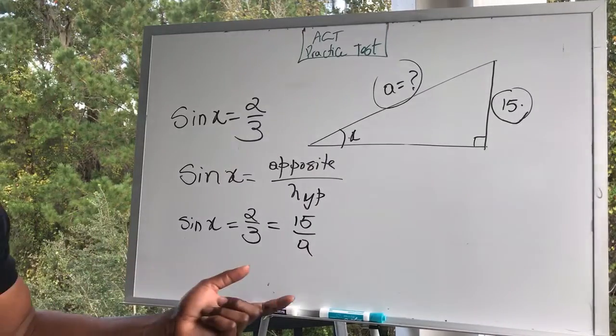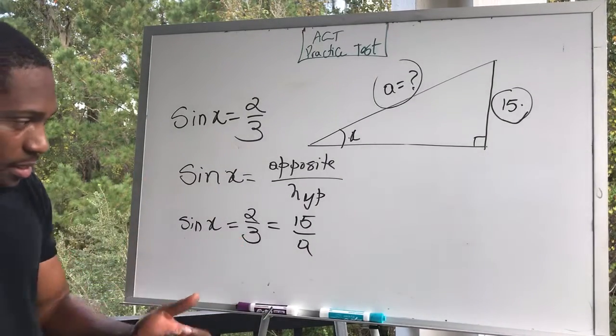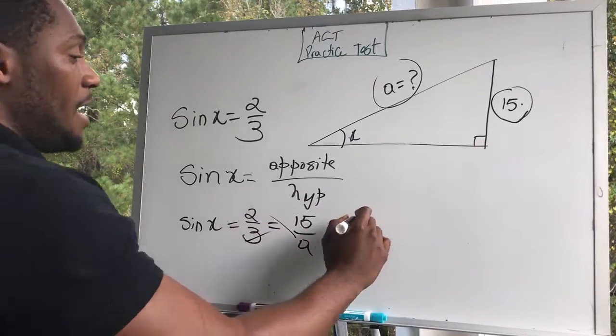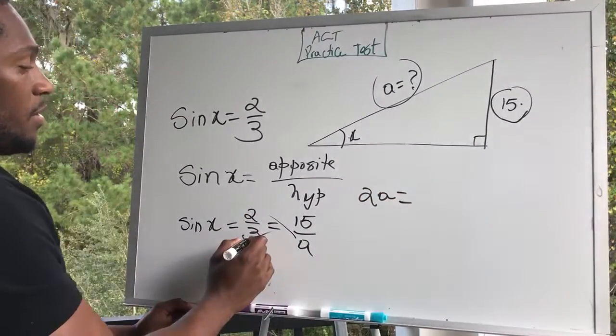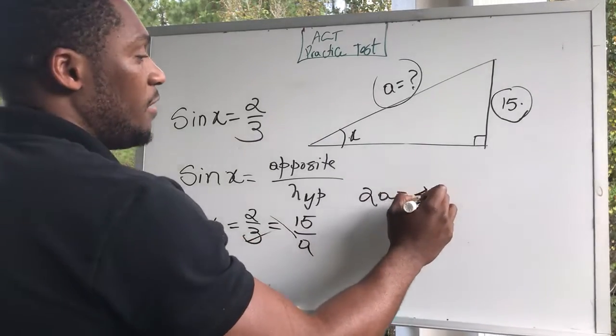So how do we solve for a? We can cross multiply. Cross multiply. So that means 2a is equal to 3 times 15 is 45.